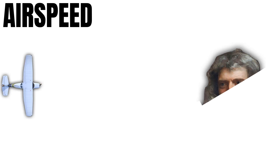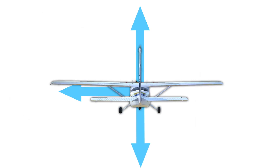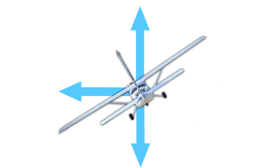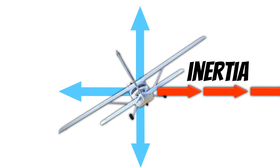Another thing that can increase our load factor is airspeed — again because of Newton's first law. The faster I'm traveling, the more my airplane wants to continue moving straight ahead. When I bank the airplane at high speed, that inertial force is really, really strong. So if I'm flying fast and I roll into a bank, this can also put a significant load on the wings.